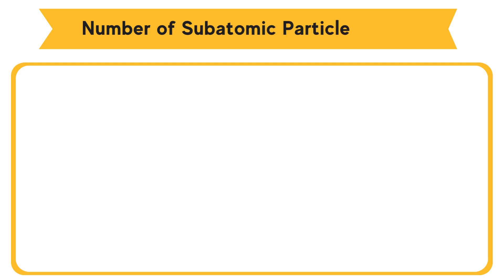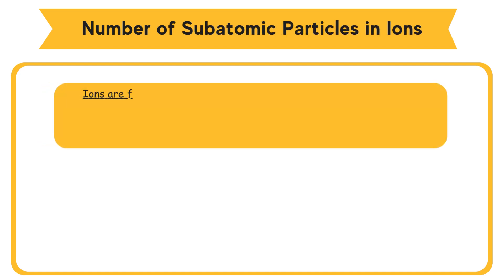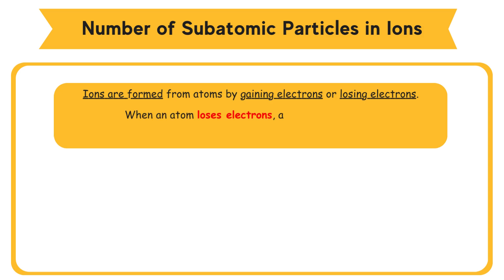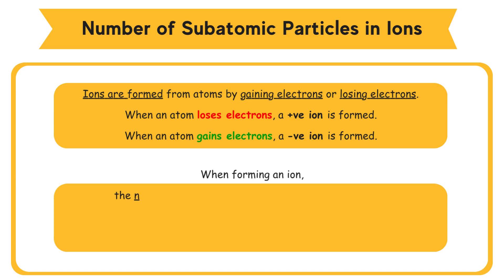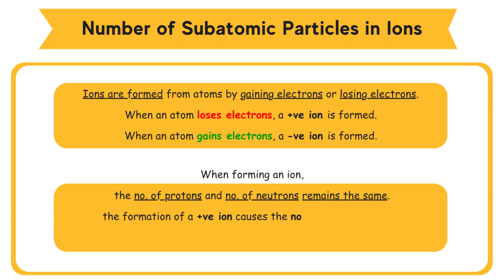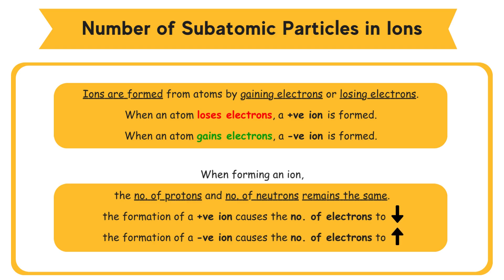Number of subatomic particles and ions. Ions are formed from atoms by gaining or losing electrons. When an atom loses electrons, a positive ion is formed. When an atom gains electrons, a negative ion is formed. When forming an ion, the number of protons and neutrons remains the same. The formation of a positive ion causes the number of electrons to decrease, while a negative ion causes the number of electrons to increase.